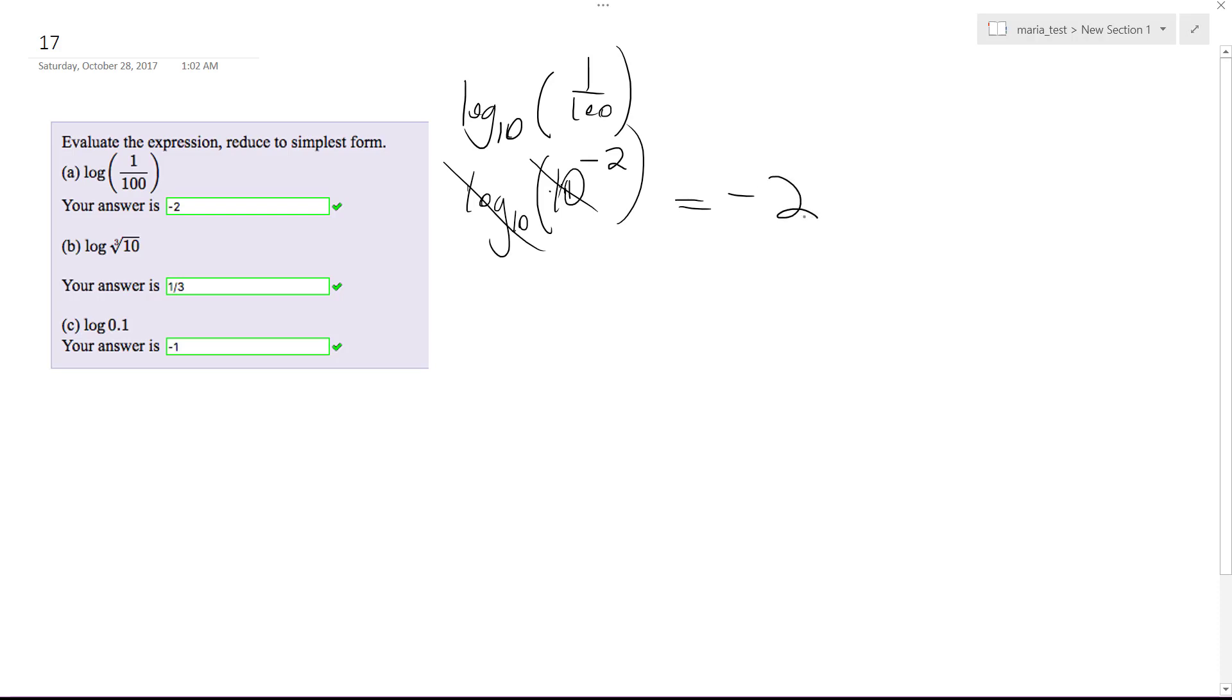Second part, same principle. Log base 10 because it's not denoted. If you have log it's base 10, if you have ln it's log base e. So this is the same thing as 10 raised to the 1/3. These cancel out and you're left with 1/3.